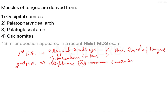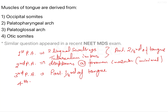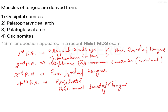There is still minimal contribution from the second pharyngeal arch. The third pharyngeal arch forms the posterior one-third of the tongue. The fourth pharyngeal arch leads to the development of the epiglottis and the posteriormost part of the tongue. Since the second pharyngeal arch has minimal contribution, it can sometimes be excluded when choosing from options.